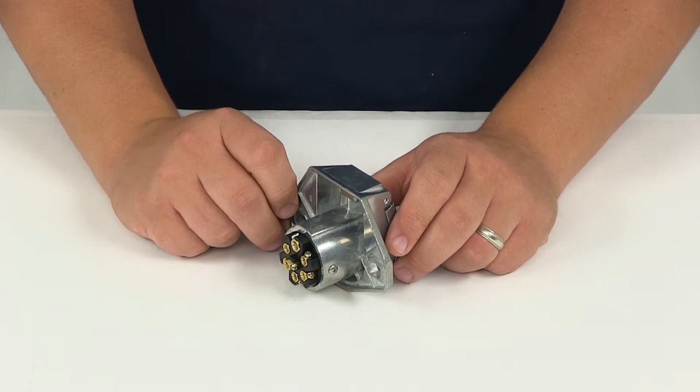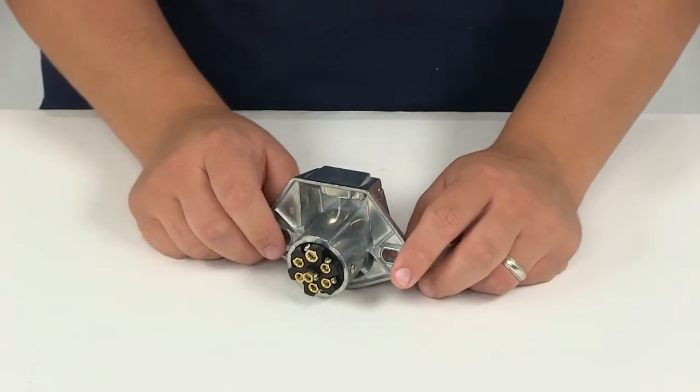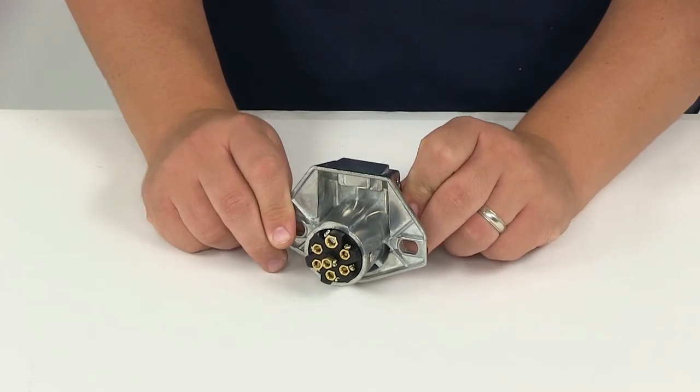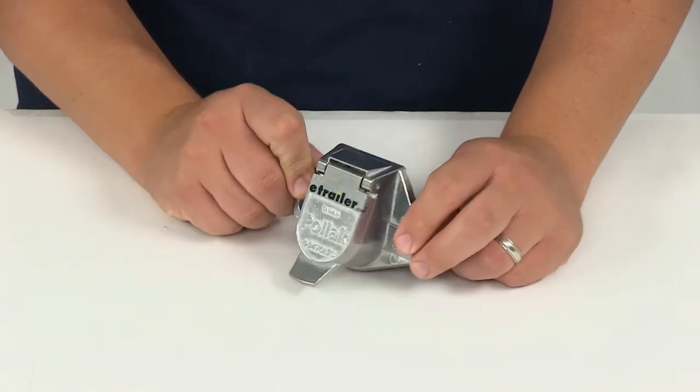Green is for right turn and hazard signal, and brown is for your tail, rear clearance, marker, and license plate lamps. We recommend 12 gauge for both of those. And then blue is for your auxiliary circuit. We recommend 10 gauge wiring.